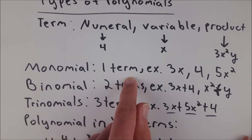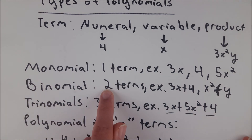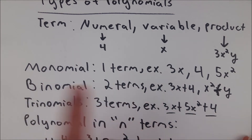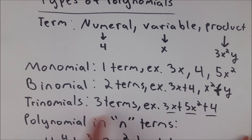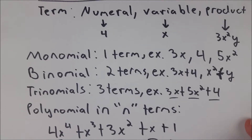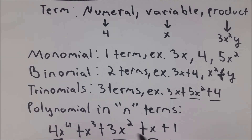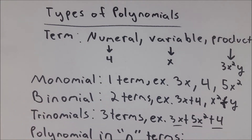We've got monomials for polynomials with 1 term, binomials for polynomials with 2 terms, trinomials for polynomials with 3 terms, and then from there we just say polynomial in n terms based on however many terms it is. I hope this video helped you understand what terms are and what names we use to refer to polynomials of different amounts of terms. Let me know in the comments if you have any questions or need anything clarified, or if you have any other video requests. Thank you very much for watching. I'll see you next time, and be sure to subscribe for the swankiest math videos on the internet.